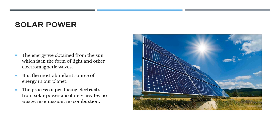Now next is solar power. You can see that we have a solar panel in front of us. There is a sun giving sunlight to the panels. The energy that we obtain from the sun is in the form of light and other electromagnetic waves. Why is that important? It's because there is an abundant source of energy on our planet, meaning that the sun will always come during the day and give this kind of radiance to the panels if they're placed in a proper place. There is no shortage.